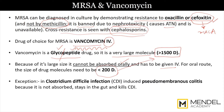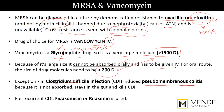However, there is an exception: in pseudomembranous colitis caused by Clostridium difficile, vancomycin can be used orally. In this case, we do not want the drug to be absorbed — we want it to stay in the gut so that it can kill the bacterium inside the lumen of the gut. In recurrent pseudomembranous colitis, you have to give the patient either fidaxomycin or rifaximin as the alternative to vancomycin.